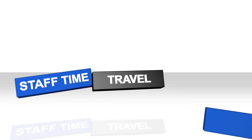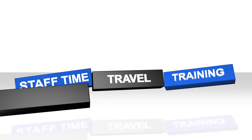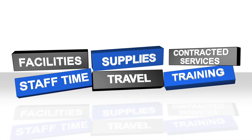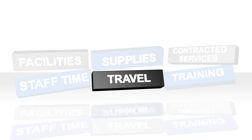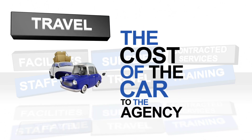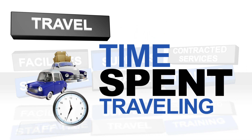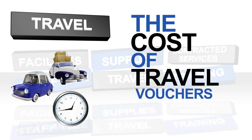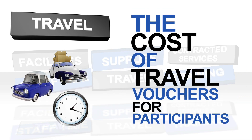Let's go through all the ingredients required to run your in-home service. There's staff time, travel, training, facilities, supplies, and contracted services. That's a great start. An ingredient like travel could be broken down further into the cost of the car to the agency, gas, time spent traveling, and the cost of travel vouchers for participants, if you provide those.